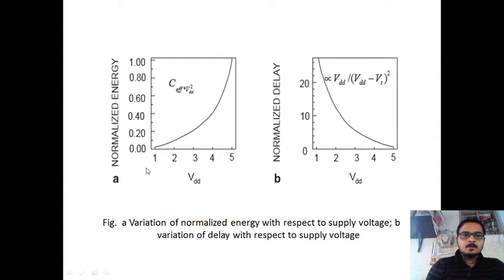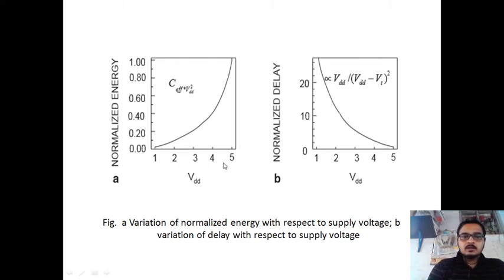See this graph: on the x-axis we have VDD (supply voltage), and on the y-axis we have normalized energy, which is power multiplied by delay — this normalized energy represents performance. When you scale the supply voltage, decreasing VDD, the performance decreases.